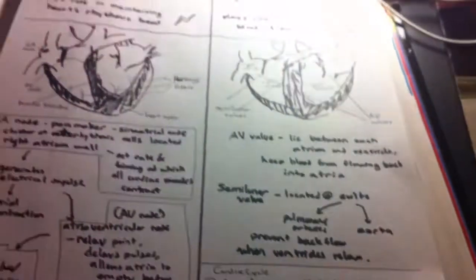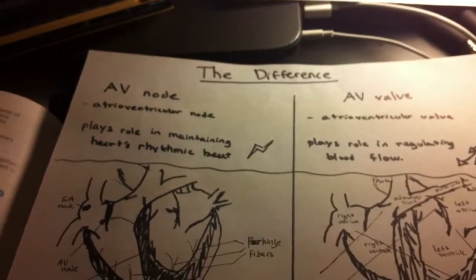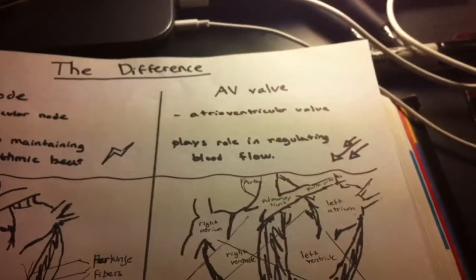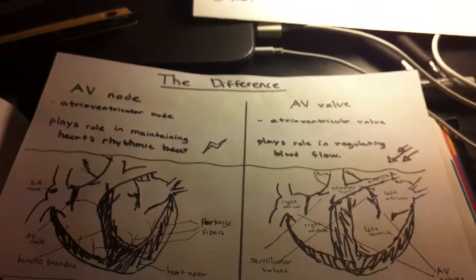And that's the difference between the AV node and the AV valve based on their functions of rhythmic beats and blood flow respectively.